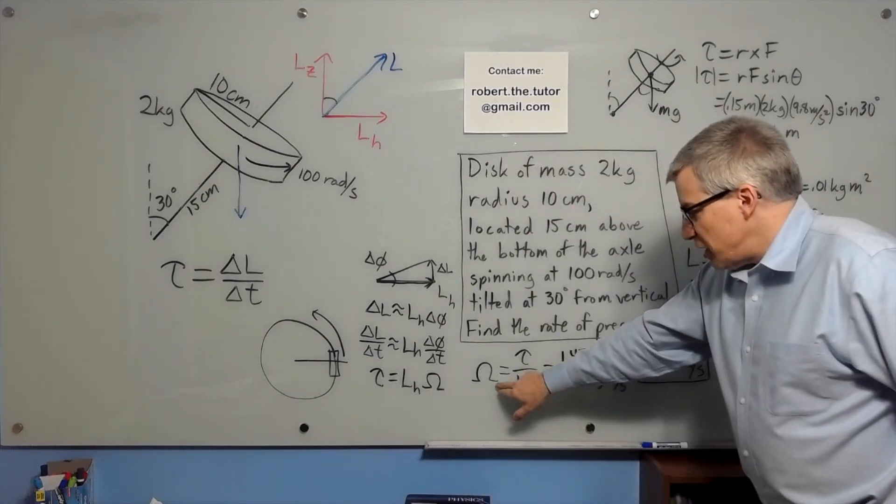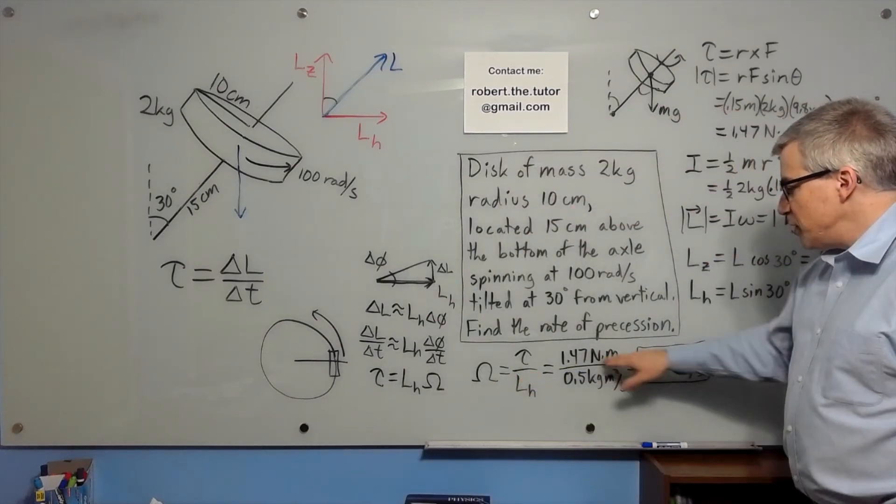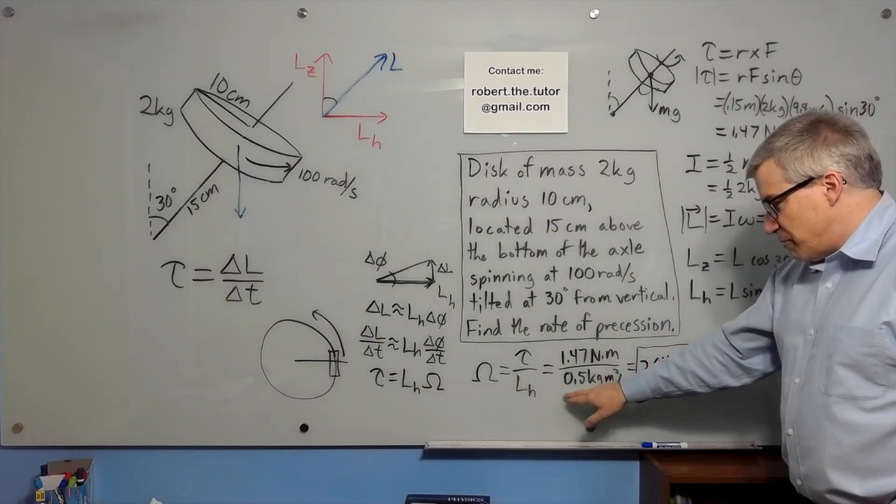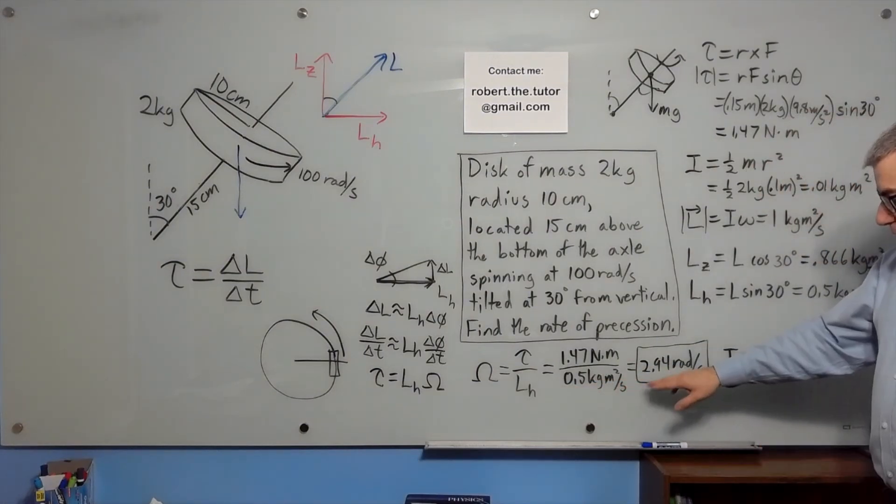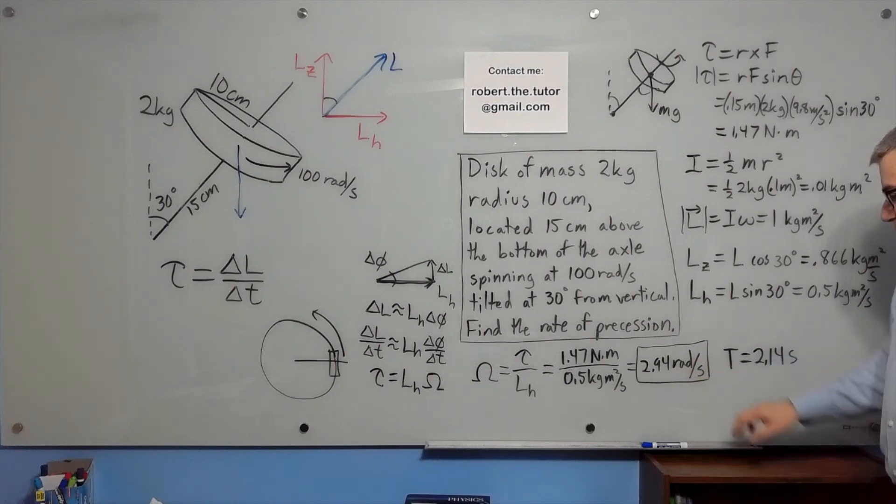So finally, we get the rate of precession is 1.47 newton meters divided by 0.5 kilogram meter squared per second. So we get capital omega, 2.94 radians per second, or a period of 2.14 seconds. That's how fast it precesses.